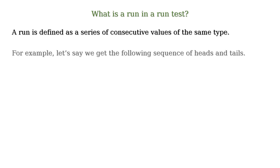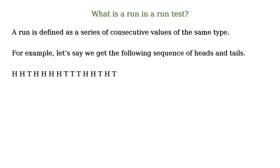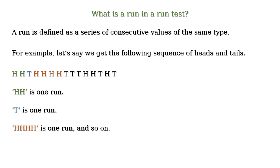For example, in the above example, we get the following sequence of heads and tails. So HH is one run, T is one run, then HH is one run, and so on. All total, we got 8 runs.